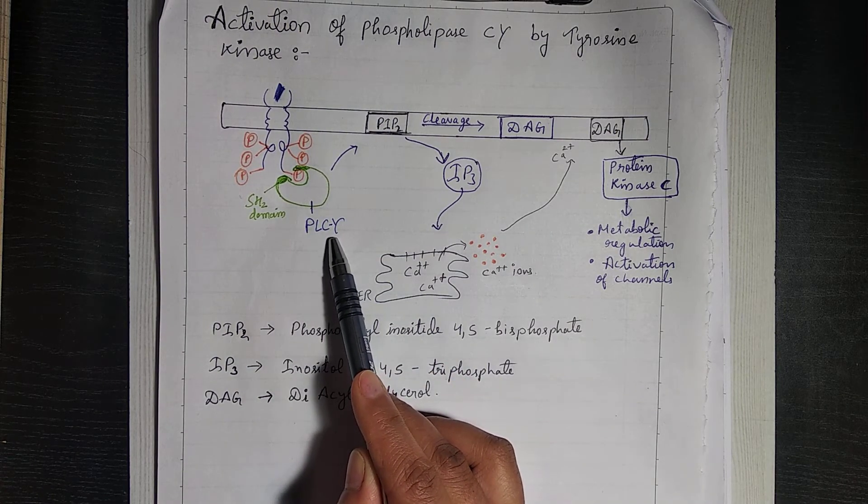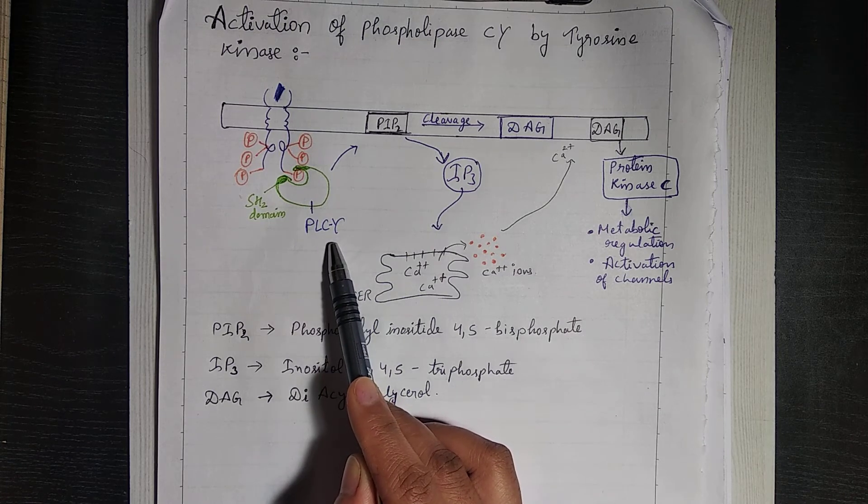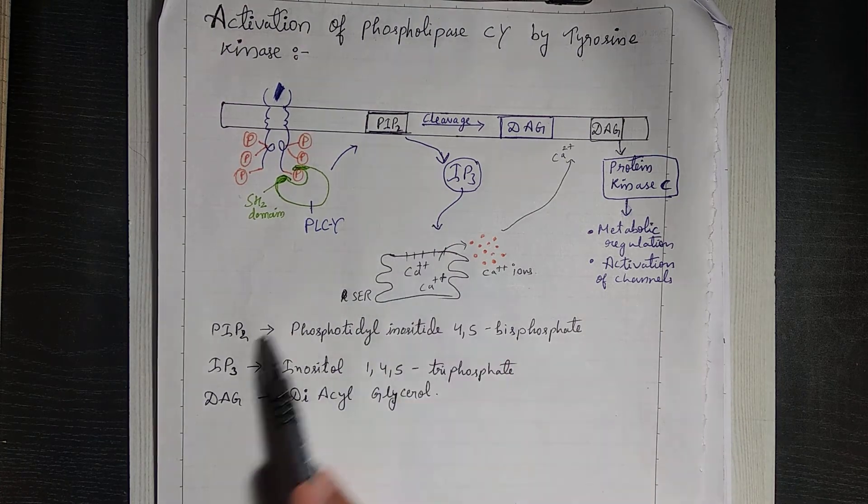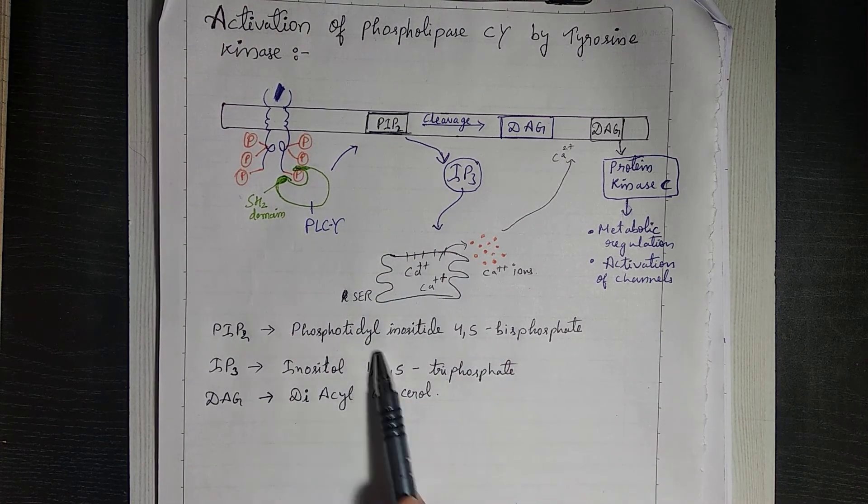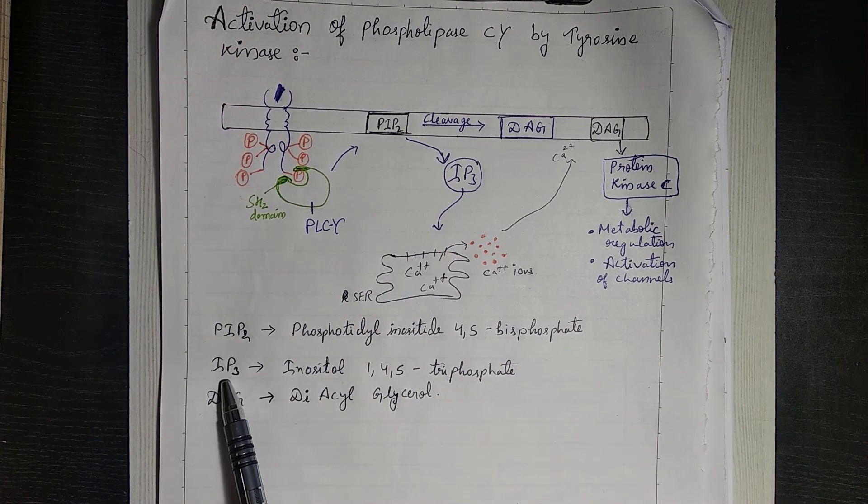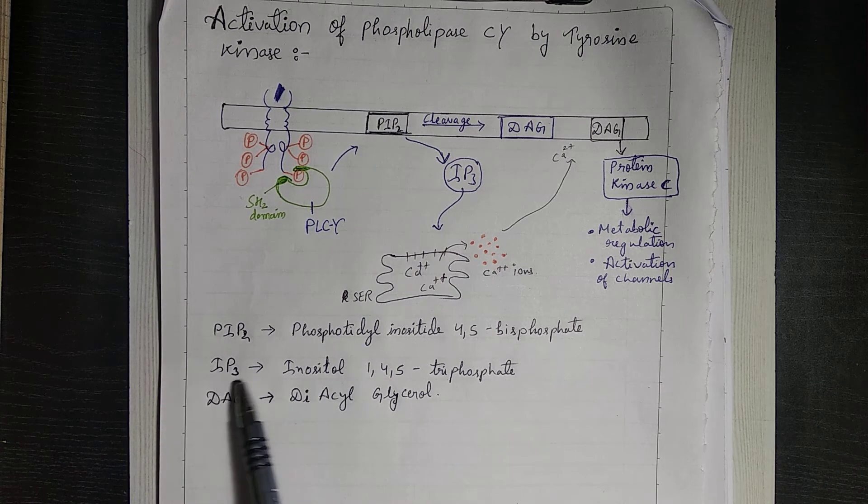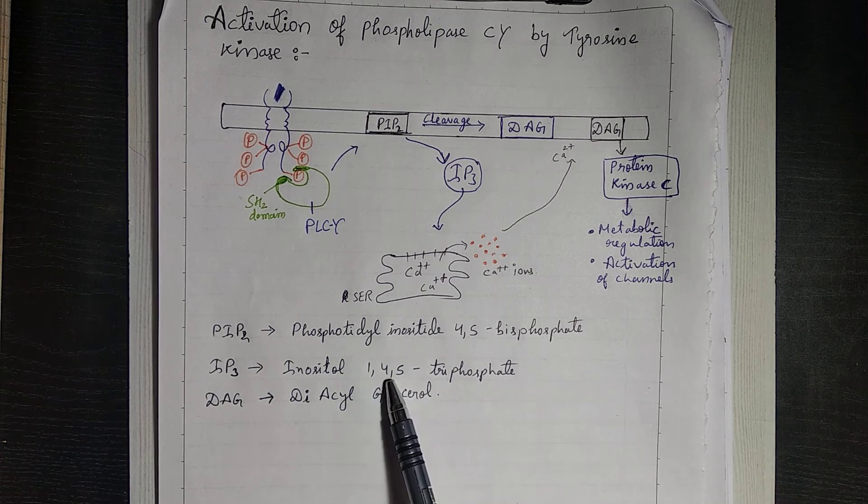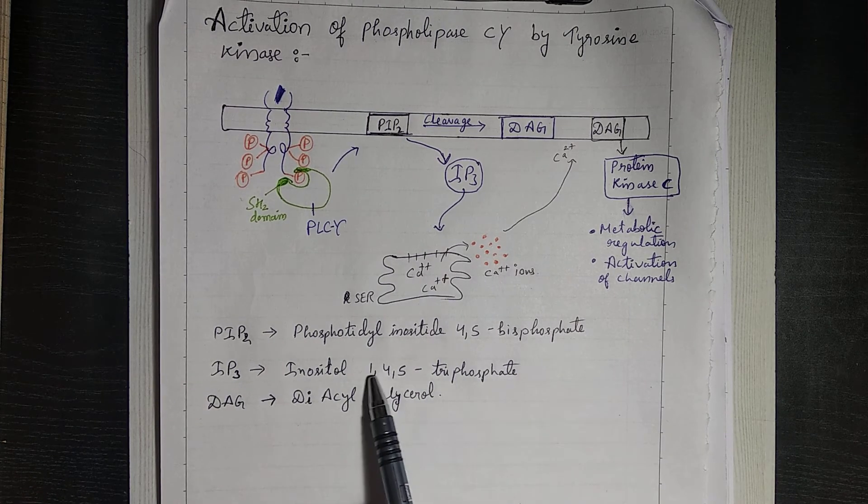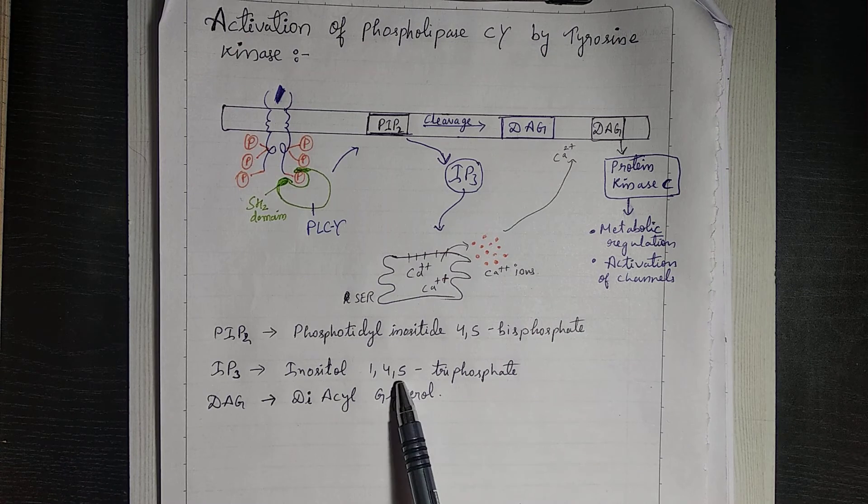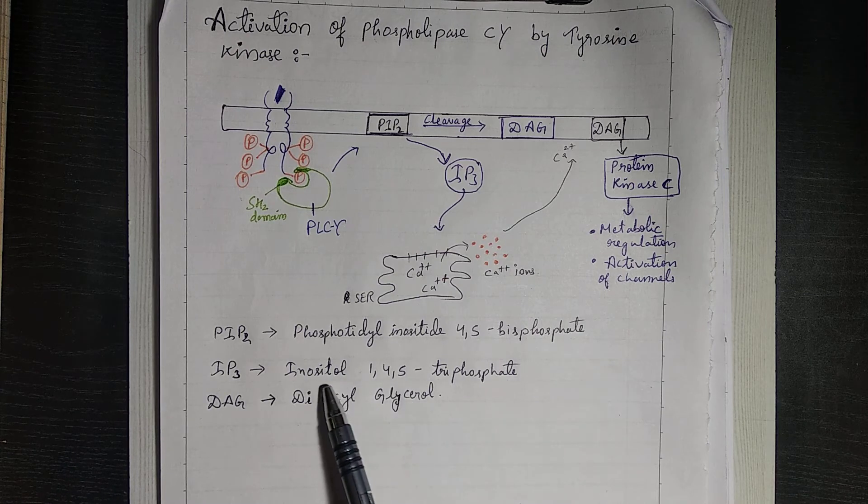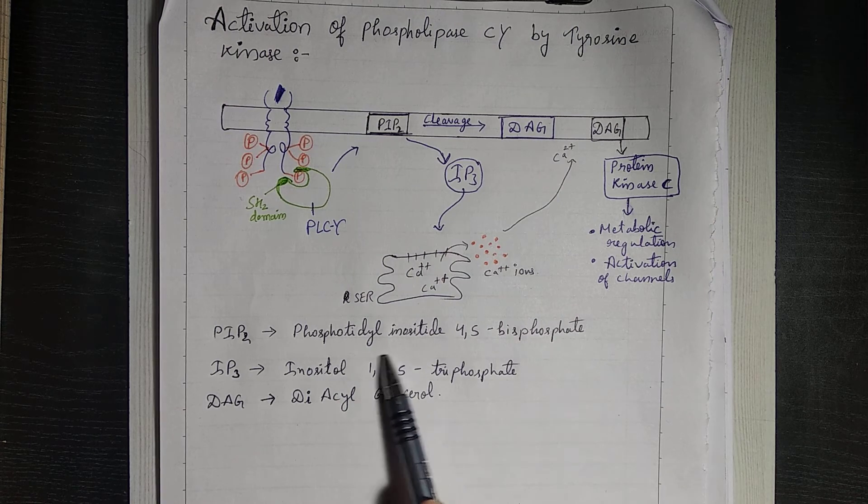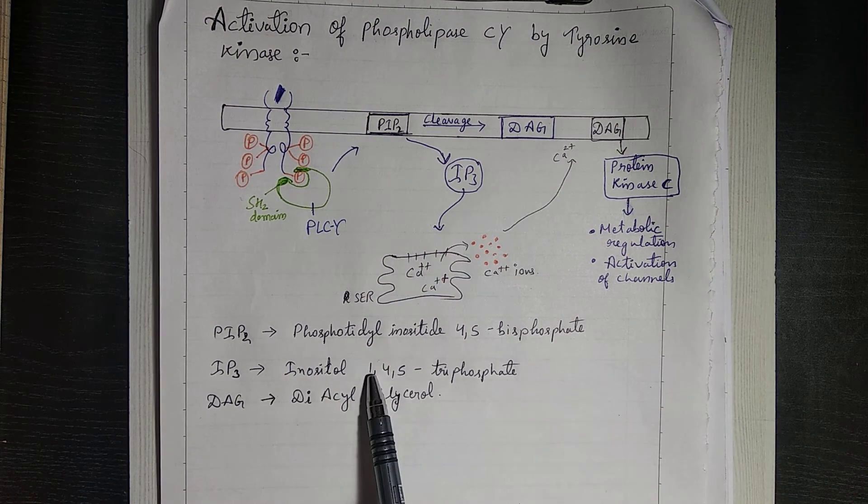Now these are some abbreviations you can see - PIP2, IP3. This should be remembered because in the exam they might give the full form and just change the location from 2,4,5 to 3,4,5 and you will be wrong. So remember that inositol 1,4,5 - these are the sites where phosphate is present in the inositol group.